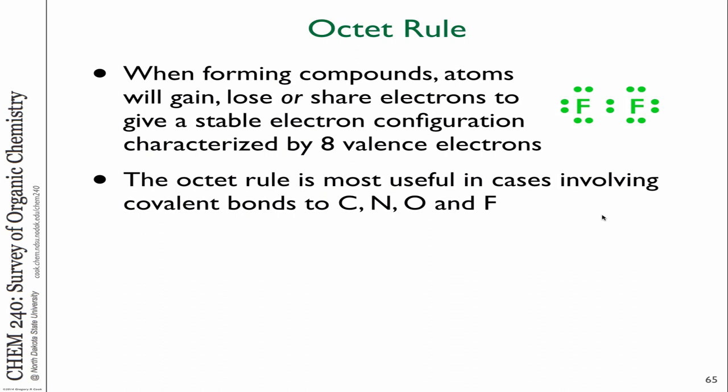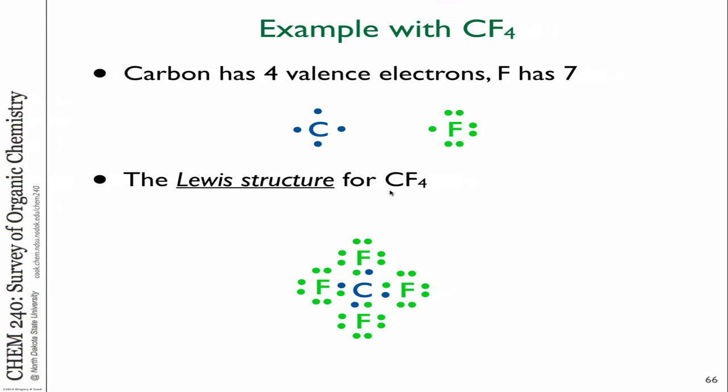The octet rule applies at the second level and above because beyond the first level, eight electrons fill the shell. For hydrogen, there's only an s orbital with only two electrons — it's happy and stable with two in the 1s shell. Carbon needs four — it's looking for four more electrons. So if you have carbon looking for four electrons and fluorine which needs one, they could form bonds, but fluorine can only form one bond. Carbon can form four bonds, so to be stable, carbon would want four fluorines around it: CF4.